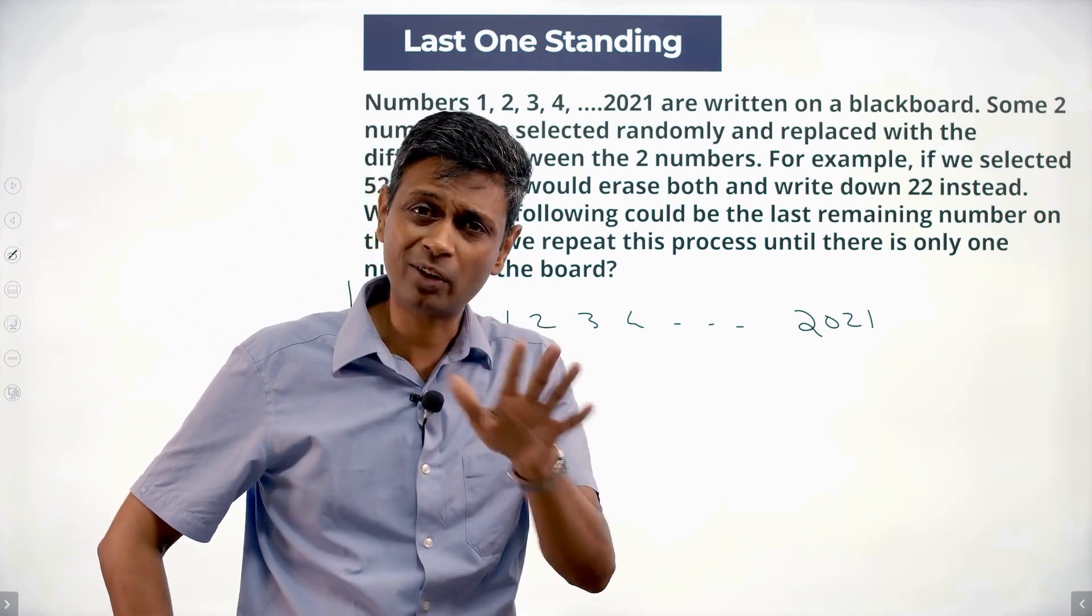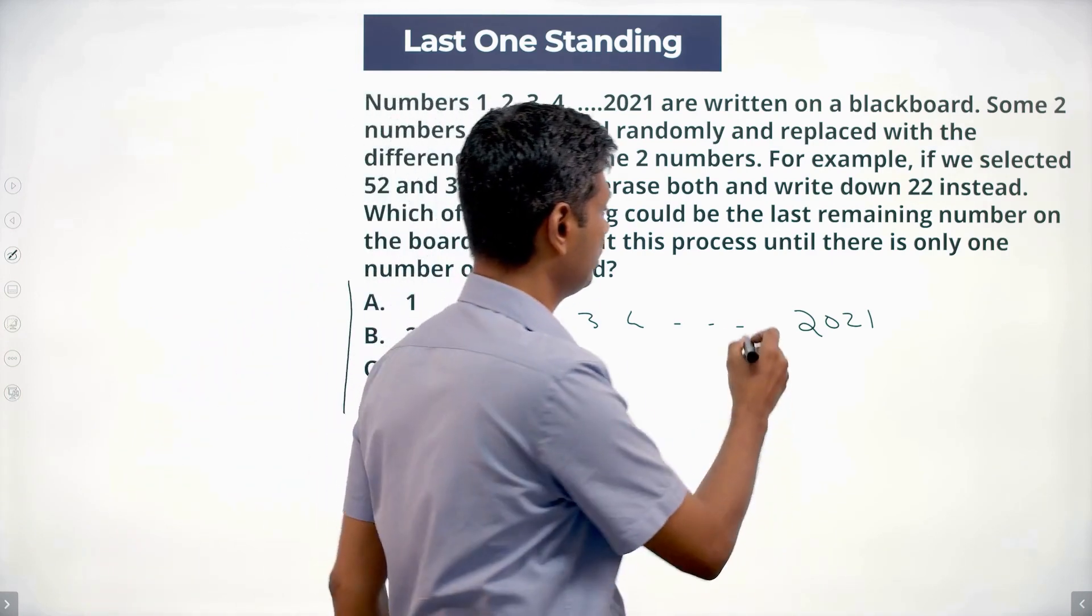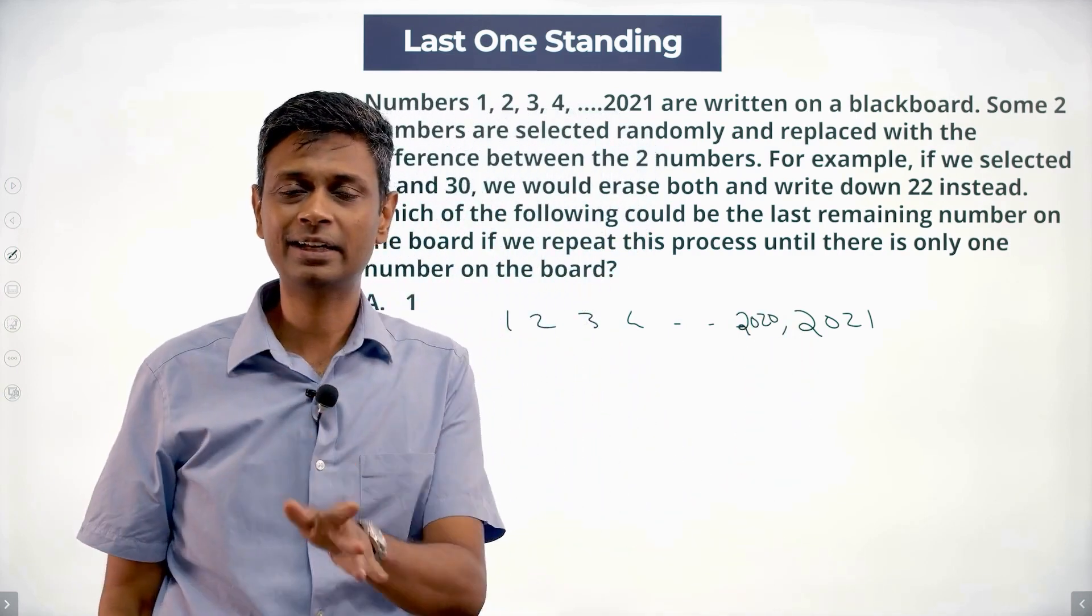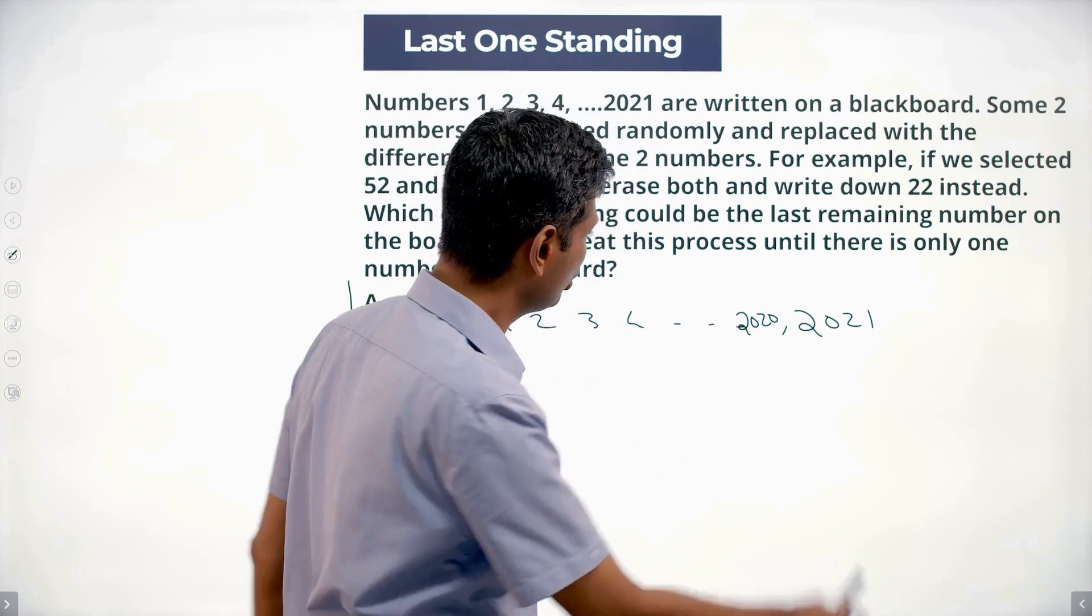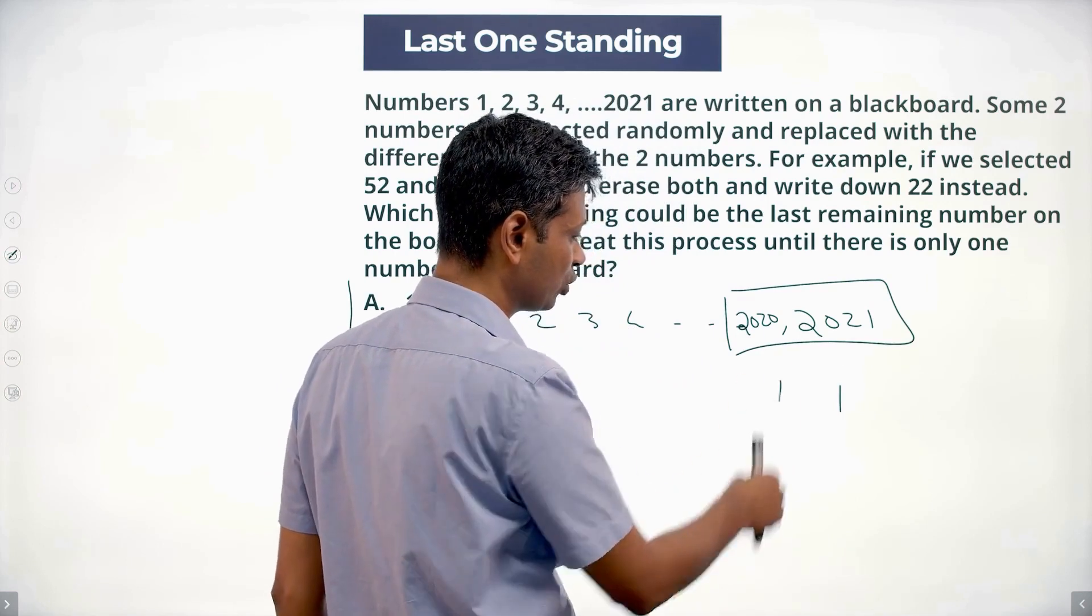What will I do? I'll say from 2021, take 2021 and 2020, subtract this, write down the difference. 2019 and 18, subtract, write down the difference. 2021 minus 2020 is 1, 19 minus 18 is 1.